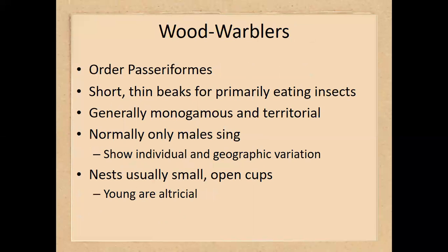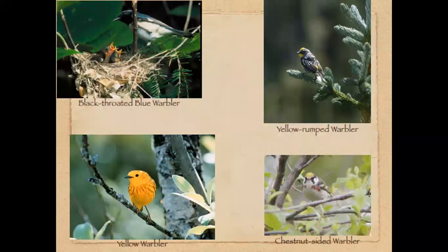The wood warblers have very thin beaks, primarily for eating insects. In this group, only the males sing, and the nests are small, open-cup nests. These are examples of wood warblers, some of which can be found in this area.